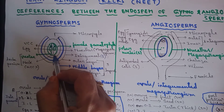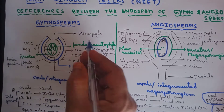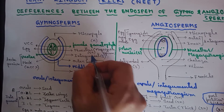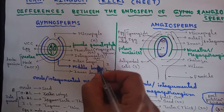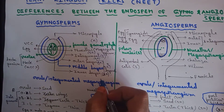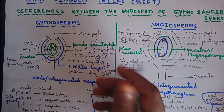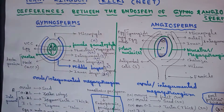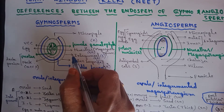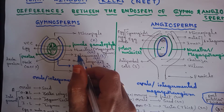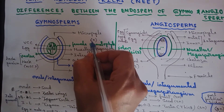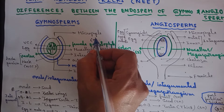That functional megaspore undergoes many mitotic divisions resulting in the formation of the female gametophyte, which is haploid. The nucellus and integument are diploid. Haploidy starts from the megaspore — the megaspore mother cell is diploid, but the megaspore formed after meiosis is haploid. As the female gametophyte develops from the haploid megaspore, this multicellular female gametophyte is also haploid.